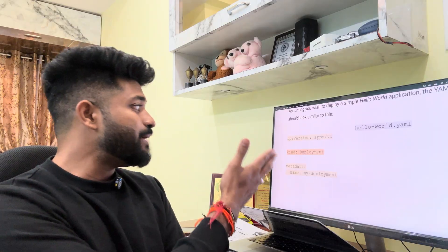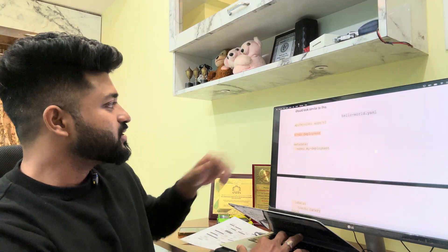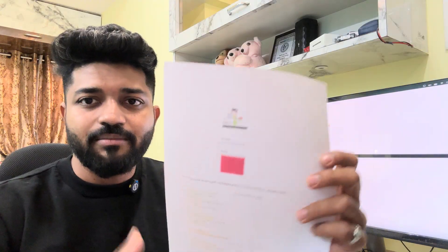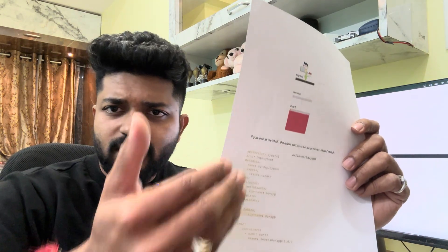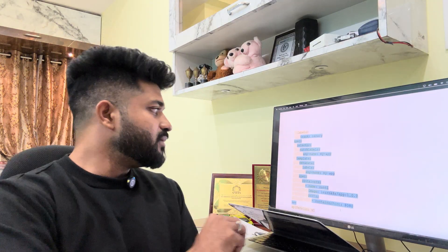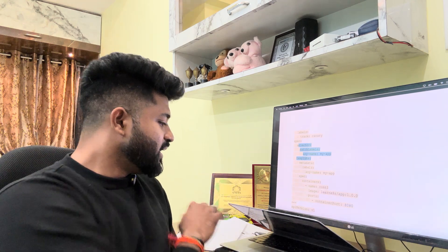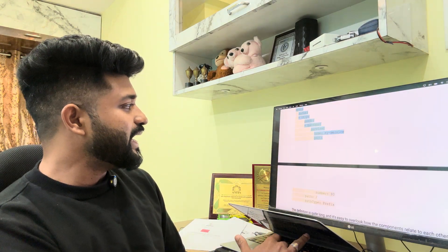Whenever you see a Kubernetes YAML file, there are four key things: `apiVersion`, `kind`, `metadata`, and `spec`. Whenever you're designing any Kubernetes resource, remember these four components — all Kubernetes resources follow this format. For a Deployment kind, the spec will include containers: you need to give the container name, image name, container port, and selectors, which help your Service talk to your Deployment.